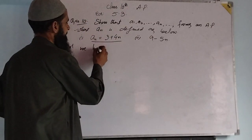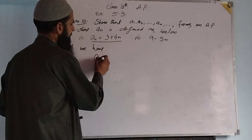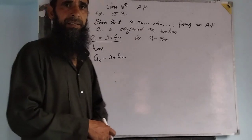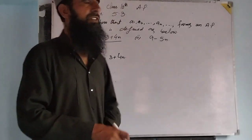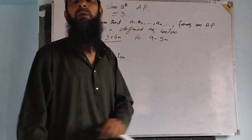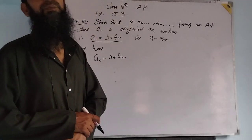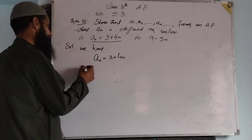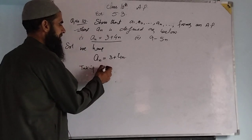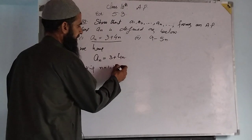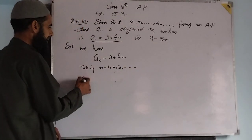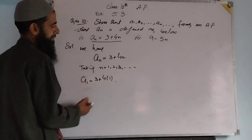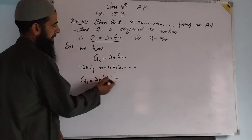We have an is equal to 3 plus 4n. Now we first see whether a1, a2, so on up to an forms an Arithmetic Progression. Taking n equal to 1, 2, 3, so on, we get a1 is 3 plus 4 into 1, that is equal to 3 plus 4, which is 7.